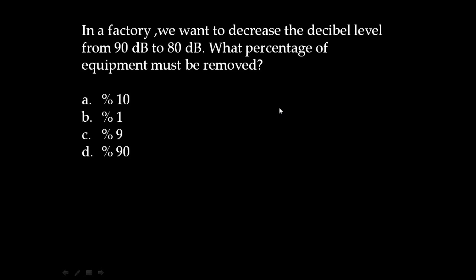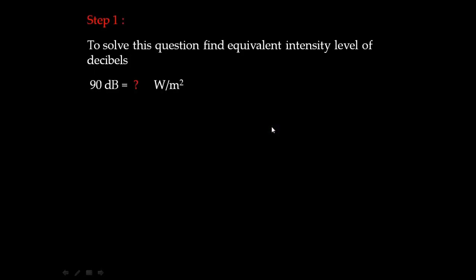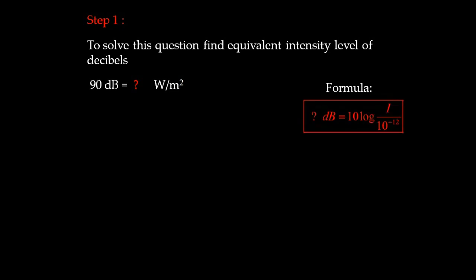I'm going to solve this question in three steps. Step one: find the equivalent intensity level of the decibels. We're going to find how many watts per meter squared corresponds to 90 decibels.